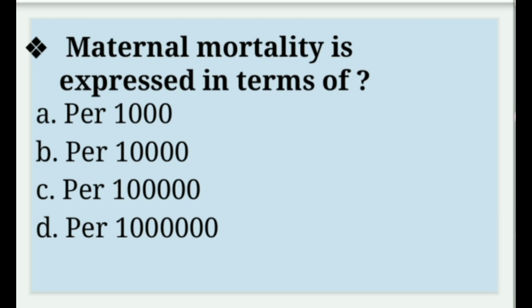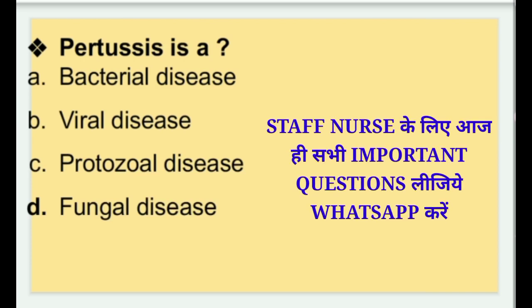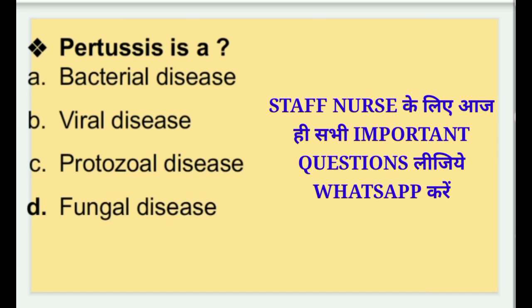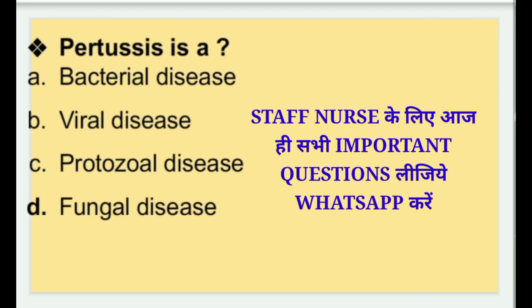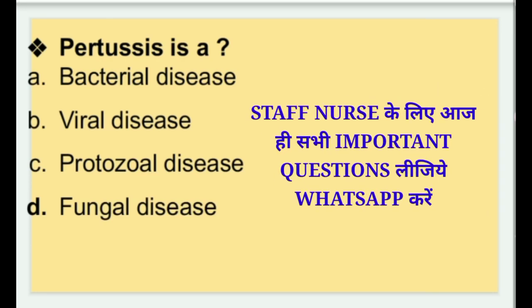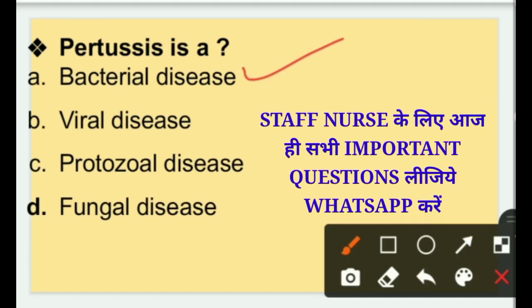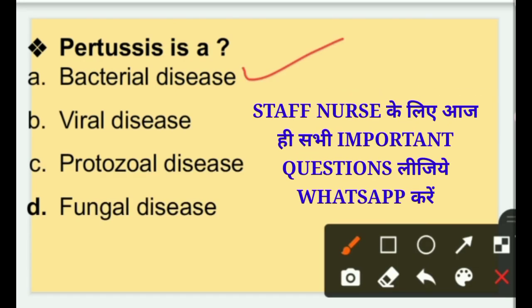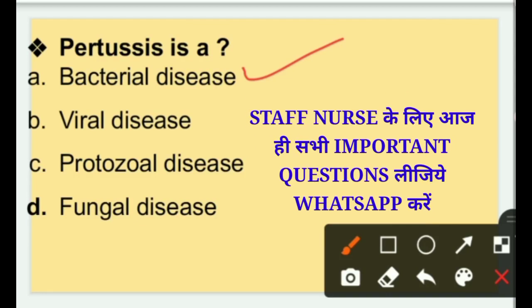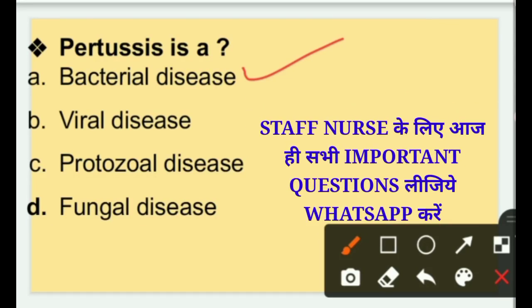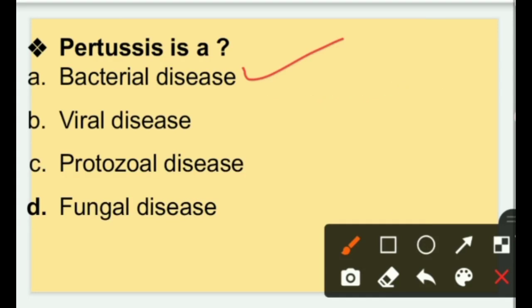Next: Pertussis — is it a bacterial disease, viral disease, protozoal disease, or fungal disease? This is a very easy question. Pertussis is a bacterial disease; option A is the right answer. It is also known as whooping cough and is caused by the bacteria Bordetella pertussis.